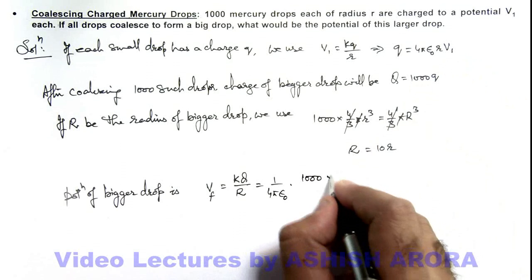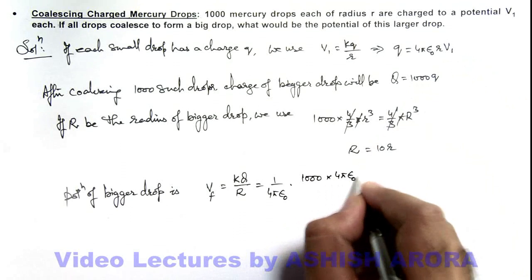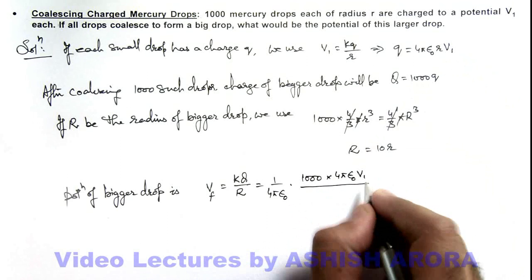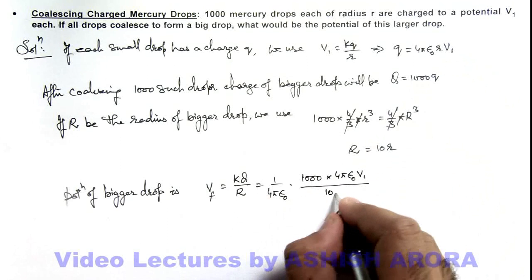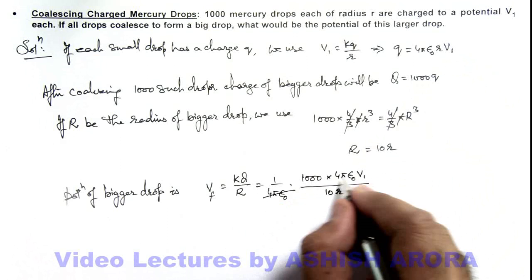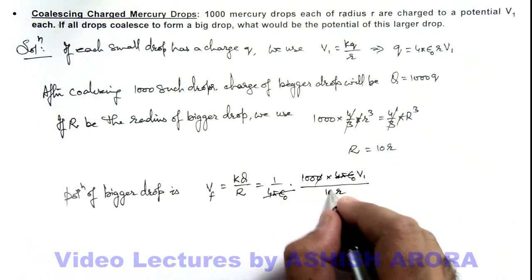The total charge is 1000q, which is 4πε₀rV₁, divided by total radius 10r. Here 4πε₀ gets cancelled out, this 10 gets cancelled out.